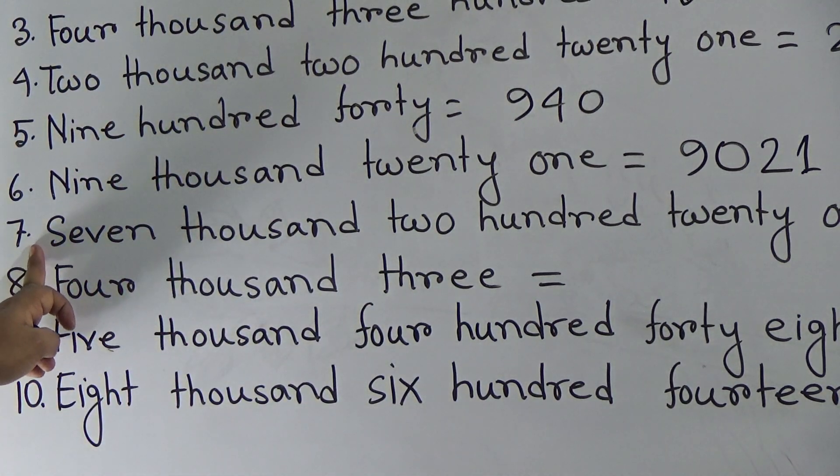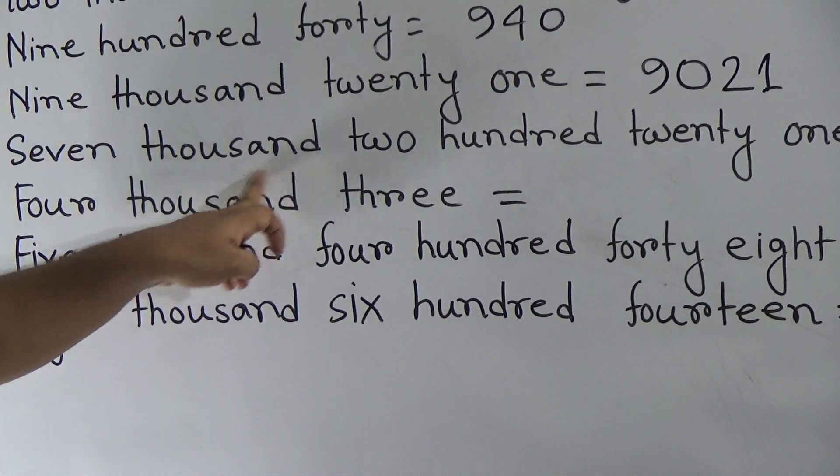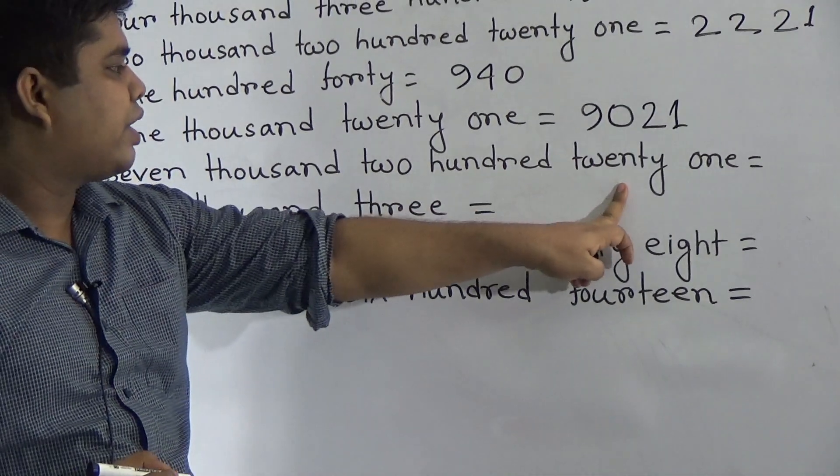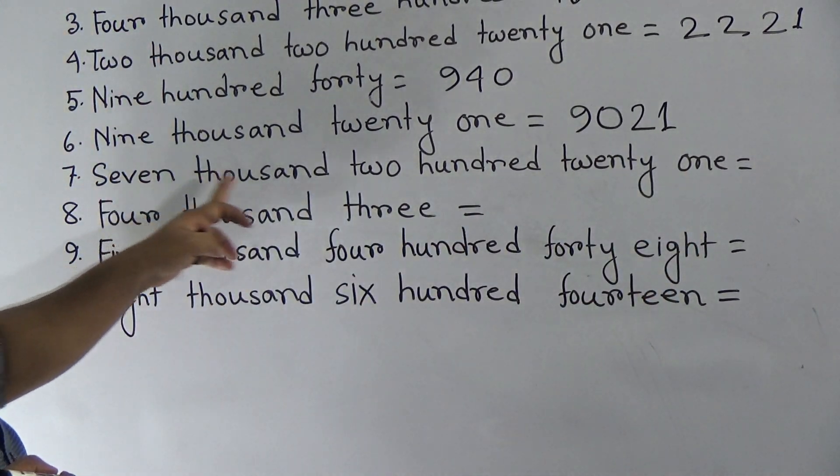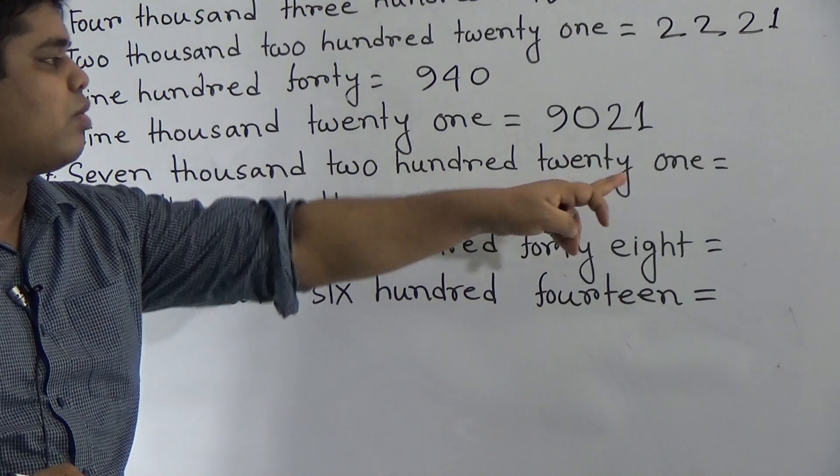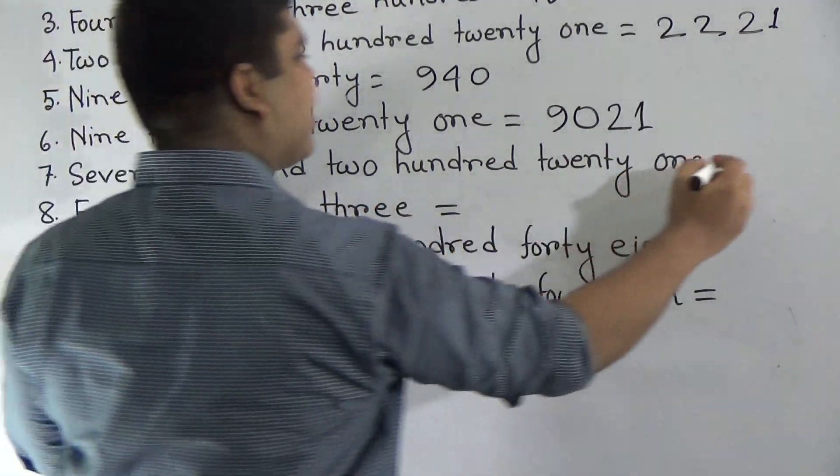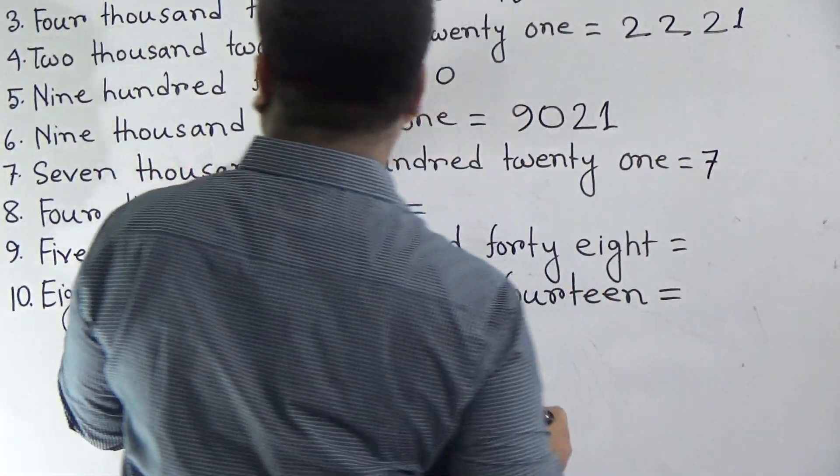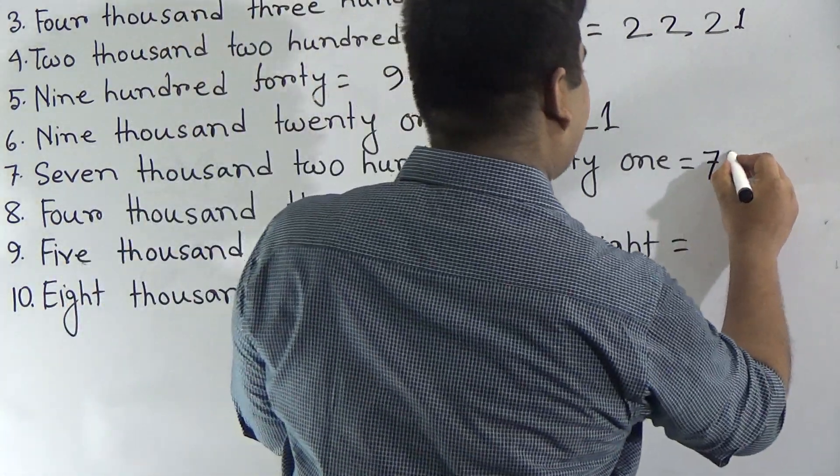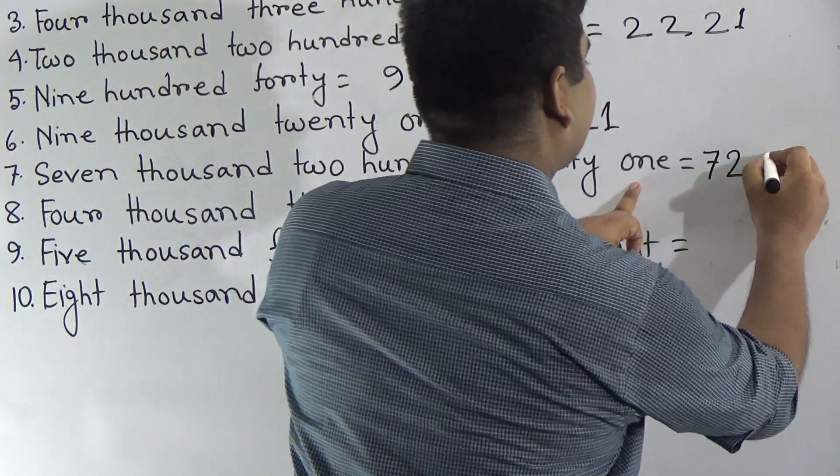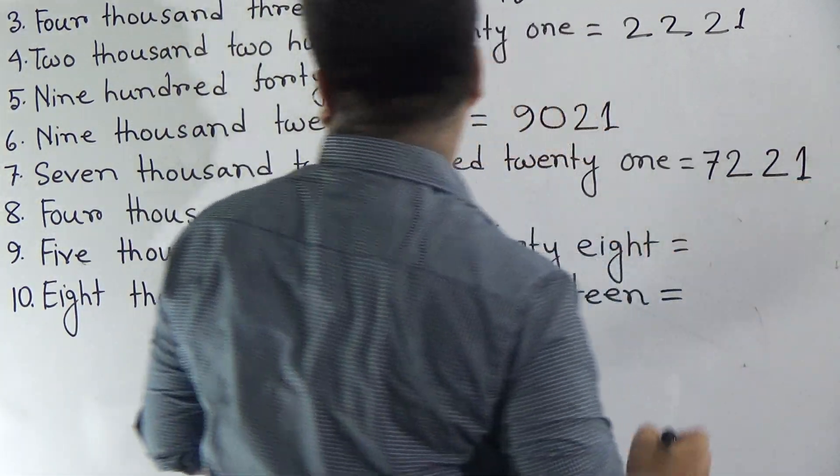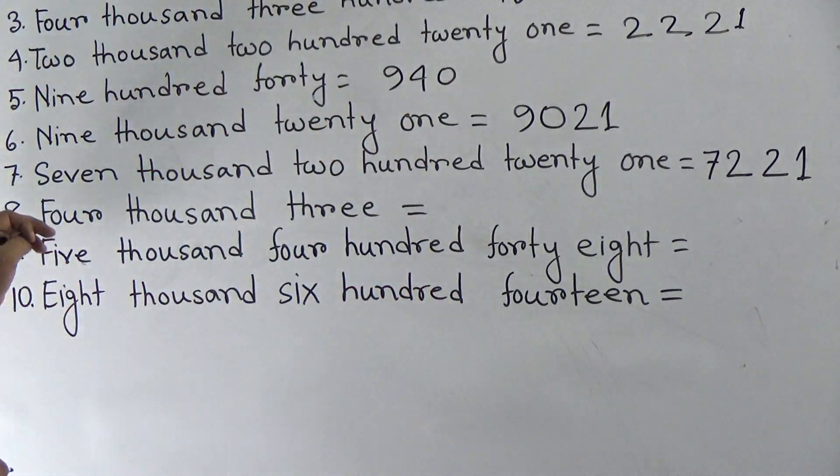Number 7, 7221. At first, we write 7 as 7000. Then, write 200. That means, write 2. And 21 means 21.